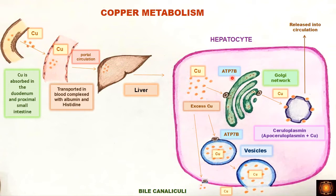The transport of copper into the Golgi apparatus is by the ATP7B protein produced by the ATP7B gene. Copper enters the Golgi apparatus where it is stored and utilized in formation of metalloenzymes, and it is also transmitted to apoceruloplasmin. Each molecule of apoceruloplasmin can combine with six copper ions, forming ceruloplasmin, which is then released into the circulation.